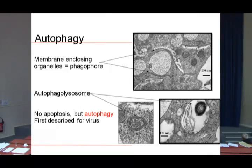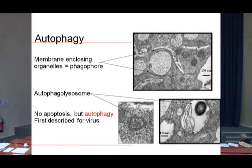We went back to transmission electron micrography and observed clear autophagy pictures — the beginning of phagophore formation with membranes enclosing organelles, and we also found autophagosomes. This was the first evidence of autophagy in human macrophages induced by polymeric nanoparticles. This kind of cell death pathway had previously been described for viruses, first in 2008.